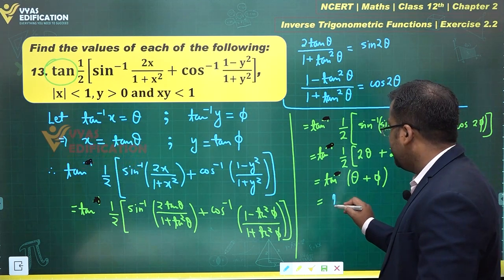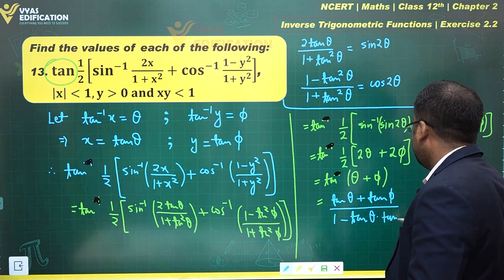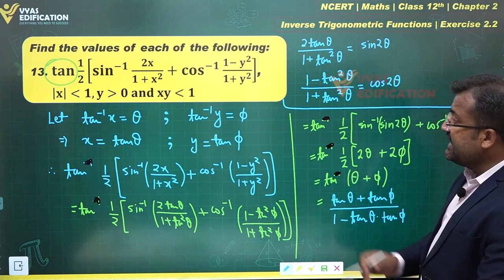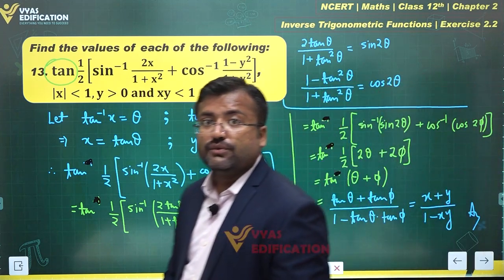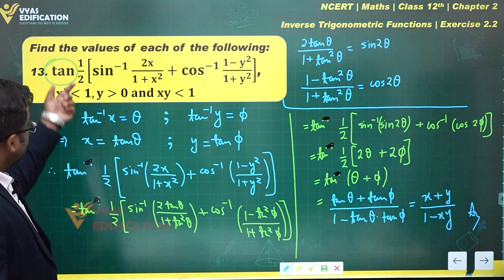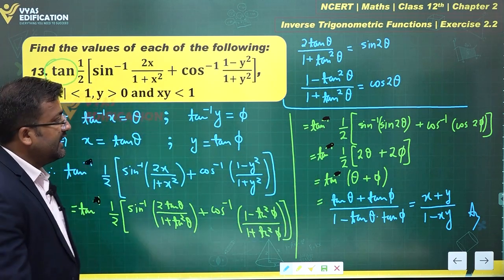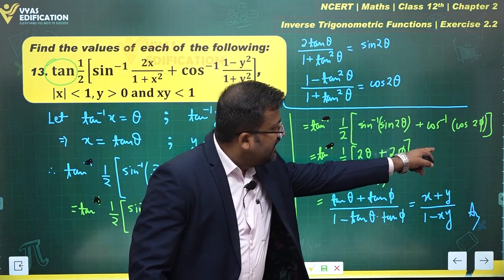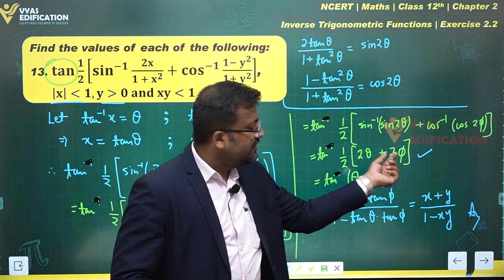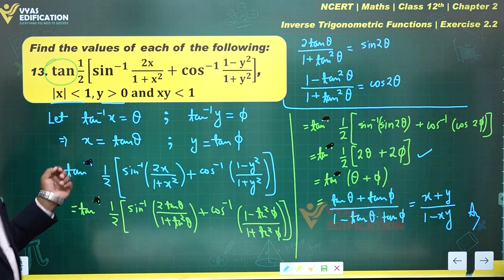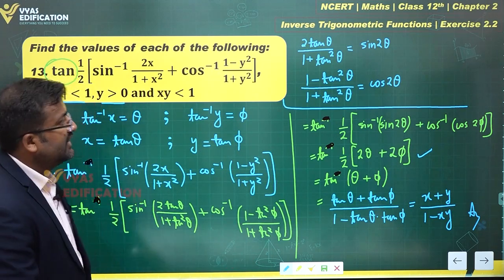We expand tan(θ + φ) = (tanθ + tanφ)/(1 - tanθ·tanφ). Since tanθ = x and tanφ = y, the required value is (x + y)/(1 - xy). The given conditions ensure sin inverse sin2θ = 2θ and cos inverse cos2φ = 2φ exactly, which completes the solution.